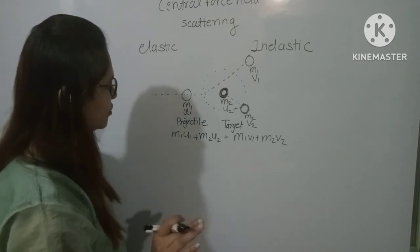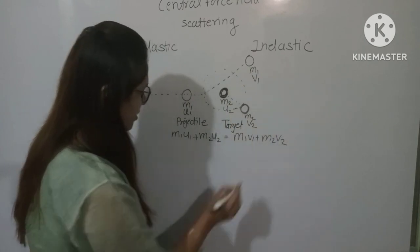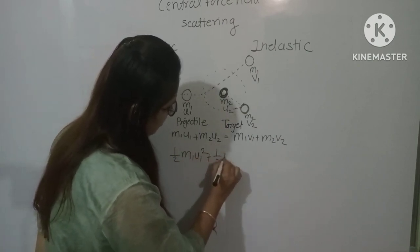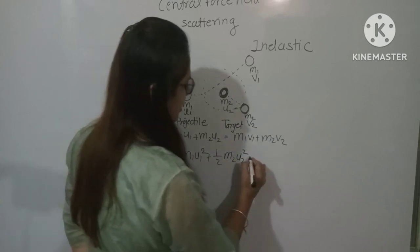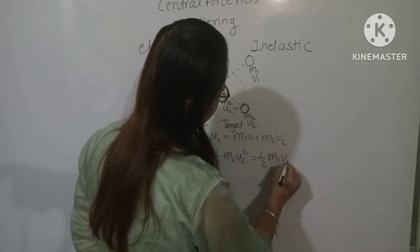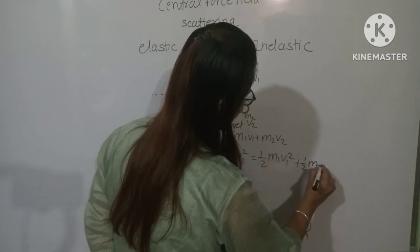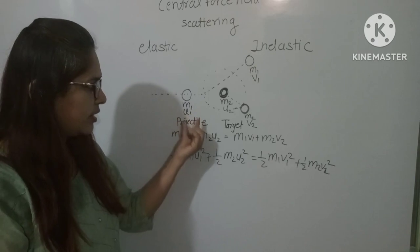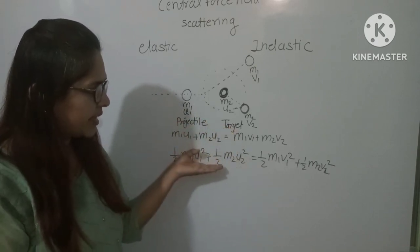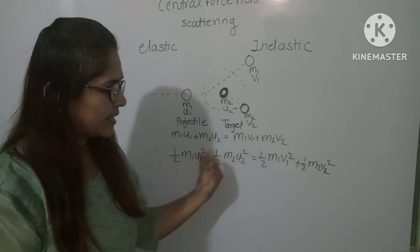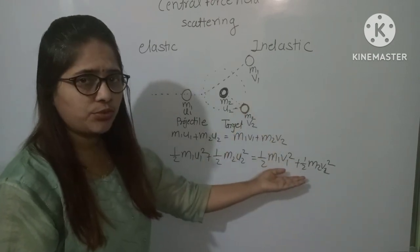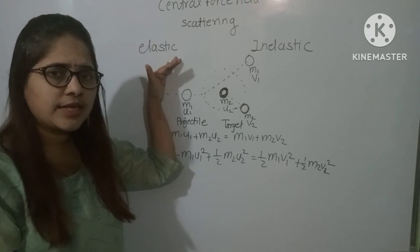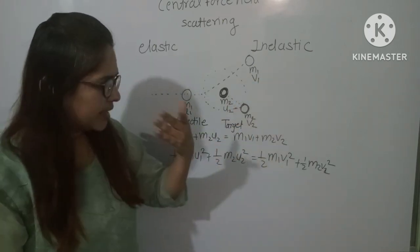The law of conservation of energy is obeyed only by elastic scattering, not in the case of inelastic scattering. For elastic scattering: (1/2)*m1*u1² + (1/2)*m2*u2² = (1/2)*m1*v1² + (1/2)*m2*v2². The total kinetic energy before collision is exactly equal to the total kinetic energy after collision. This law of conservation of energy is obeyed in elastic scattering but not in inelastic scattering.